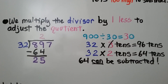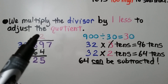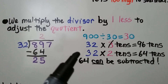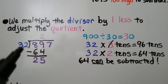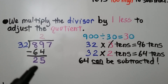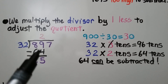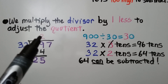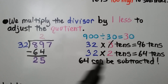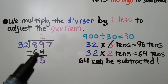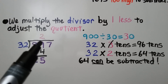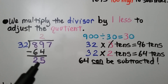We multiplied the divisor by 1 less to adjust the quotient, so we try multiplying by 2. And 32 times 2 tens is 64 tens, and we can subtract that — we get 25 tens. Putting the 3 as the partial quotient was too high, so we adjusted and made it a 2.